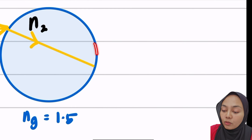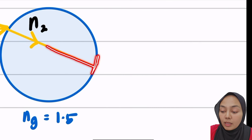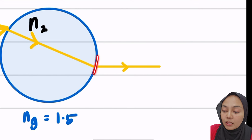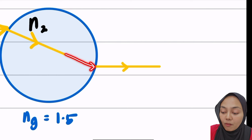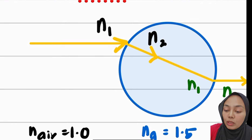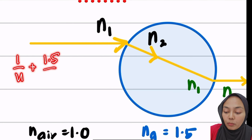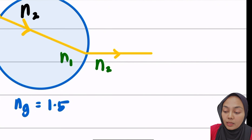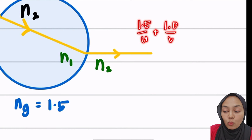Moving to the other side of the glass globe, the light rays hit the second surface and bend away from the normal back into the air. For this second surface, the glass becomes n1 and the air becomes n2. So for the first surface: 1 over u plus 1.5 over v equals 1.5 minus 1.0 over r. For the second surface: 1.5 over u plus 1.0 over v equals 1.0 minus 1.5 over r.